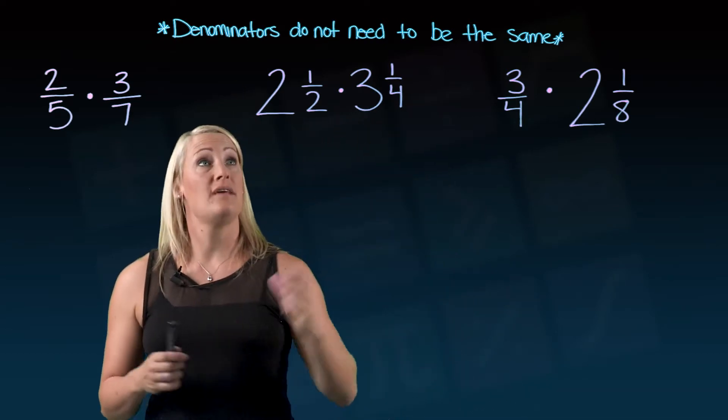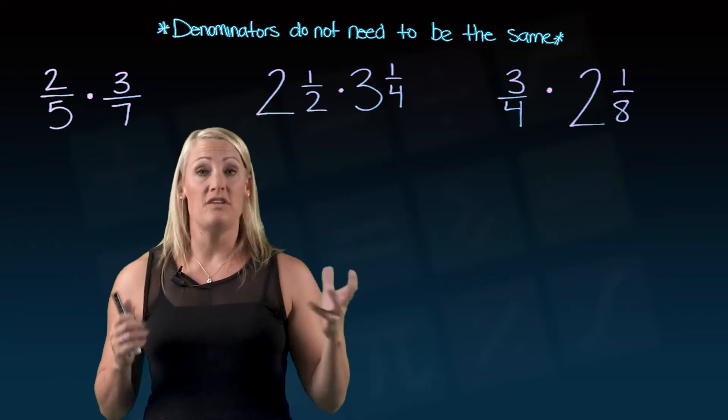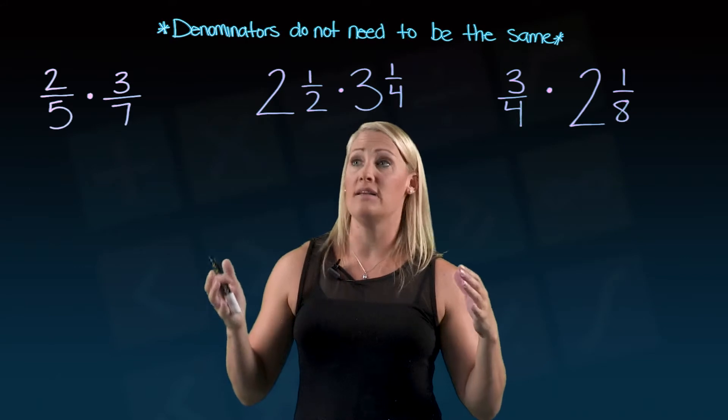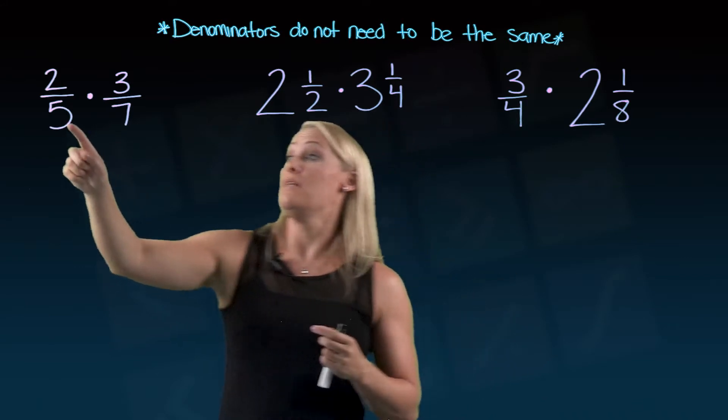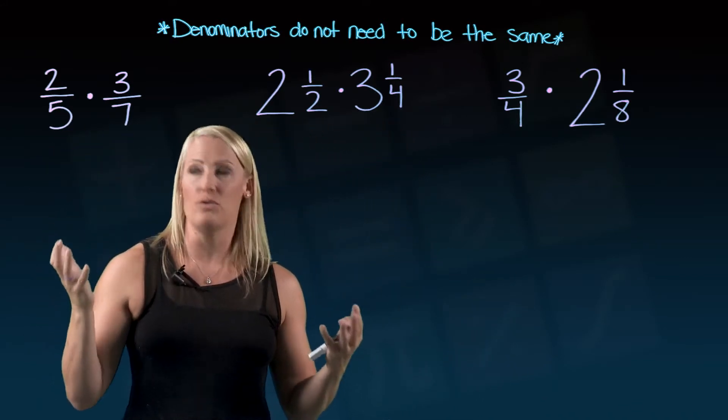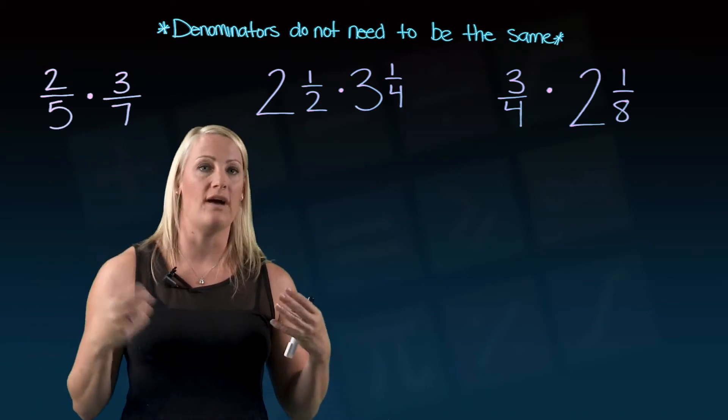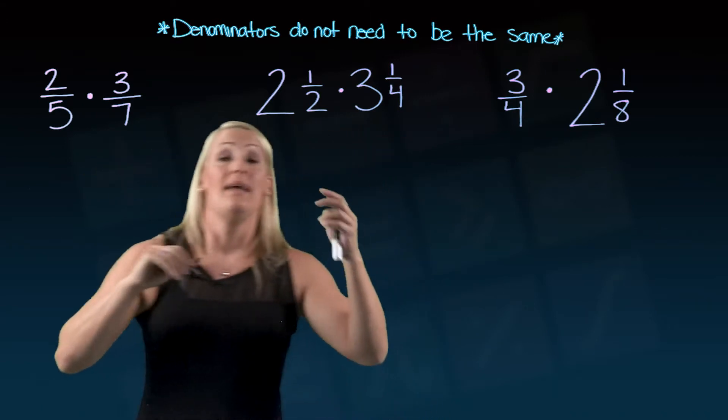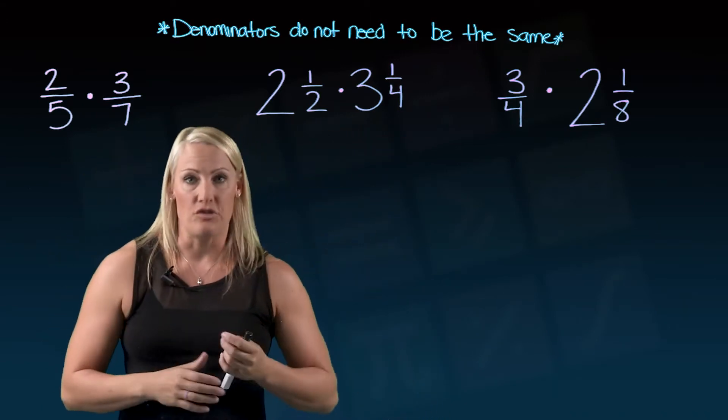And what I have written up here at the top says denominators don't need to be the same. If you have been working through dealing with fractions and you started with adding and subtracting, you'll know that these two, if we were adding those two together, we wouldn't be able to do it because the denominators aren't the same. We'd have to find the lowest common denominator. But in multiplying, the denominators don't have to be the same.